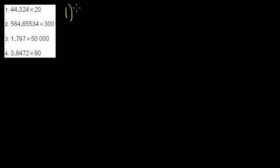So if I'm trying to take 44.324 and I'm wanting to multiply this by 20, instead of trying to multiply by 20 I can know the fact that because 20 is a multiple of 10.